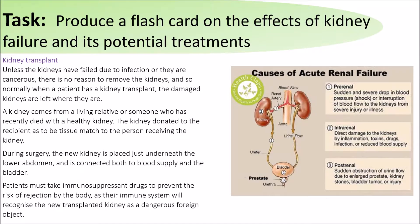Unless the kidneys have failed due to infection or they are cancerous, there is no reason to remove them, so normally when a patient has a kidney transplant, the damaged kidneys are left where they are. A kidney comes from a living relative or someone who has recently died with a healthy kidney that is a tissue match for the person receiving it. During surgery, the new kidney is placed just underneath the lower abdomen and is connected to both the blood supply and the bladder. Patients must take immunosuppressant drugs to prevent the risk of rejection of the kidney by the body's own immune system.